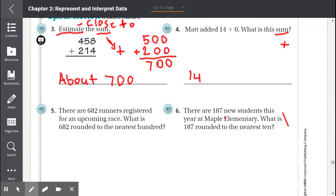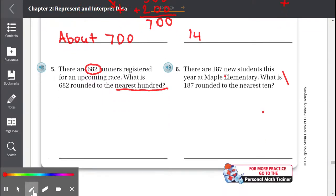Number 5, there are 682 runners registered for an upcoming race. What is 682 rounded to the nearest hundred? So we have 682. And we have to round it to the nearest hundred. So 682 is between 600 and 700. But it is closer to 700.